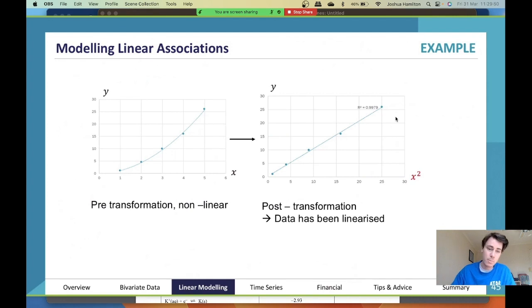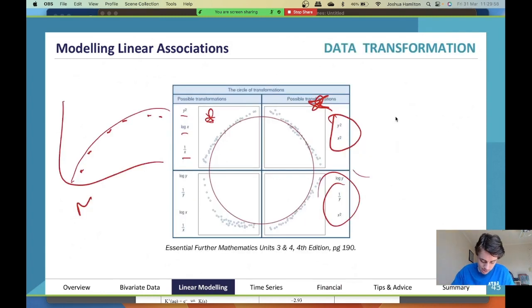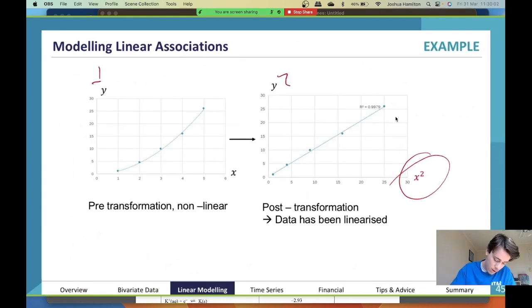Looks pretty cool. Really important - if you are to draw one of these out, you need to put the x squared or whatever transformation you did on the correct axis. So if I did y squared, I would have done y squared, or if I did one over y, I'd say one over y, etc. Awesome.